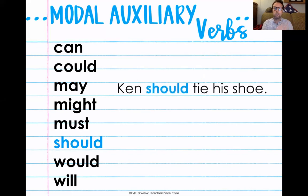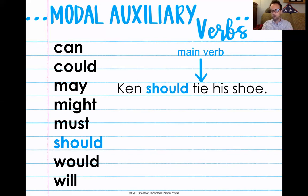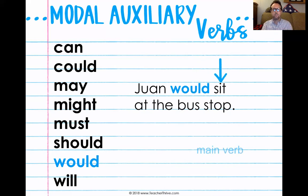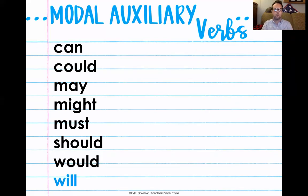Just like 'should': Ken should tie his shoe. Ken has the ability to tie his shoe because Ken is a grown man, but if he chooses not to tie his shoe, there's a chance he could fall down the steps. 'Would': Juan would sit at the bus stop. Sit is our main verb, but whether Juan does or does not is up to him. I miss Juan — he was a good student.